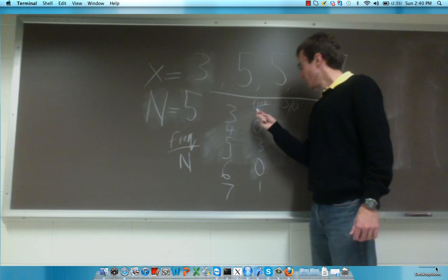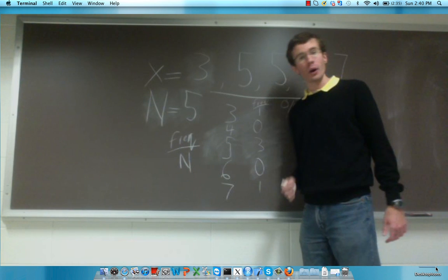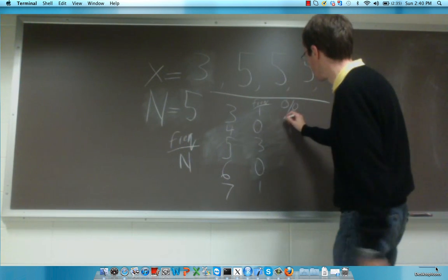In the case of 3, there was a frequency of 1 divided by n of 5 is 1 over 5 or 0.2. That's a percentage of 20.